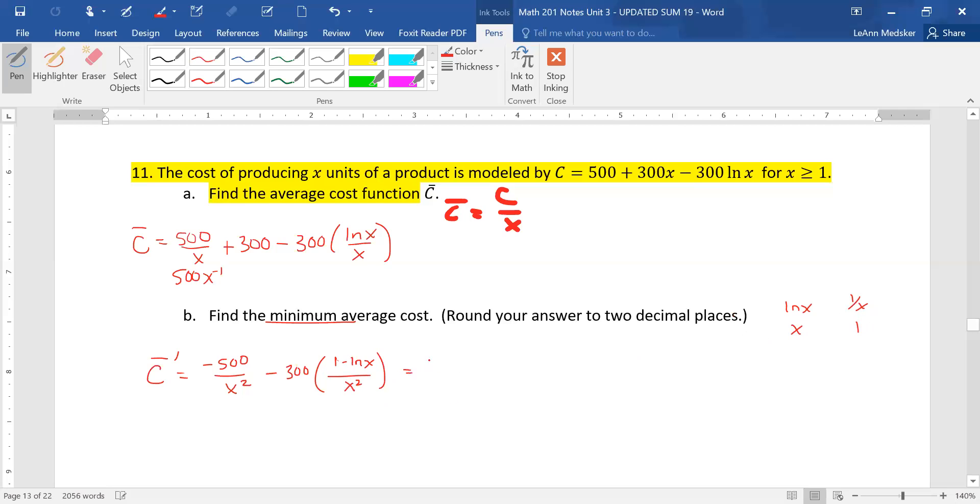Now if we kind of work this out, this is negative 500 minus 300 times 1 would still be negative 300. Negative 300 times negative natural log, it would be positive 300 natural log of X, all over X squared, and that means that this is negative 800 plus 300 natural log of X over X squared, so that's my C bar prime in simplest form.